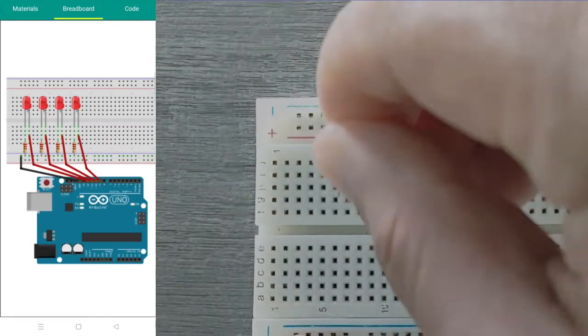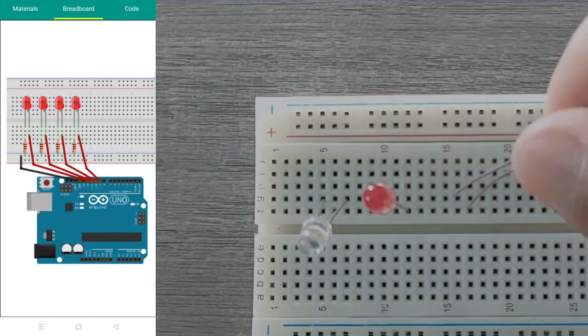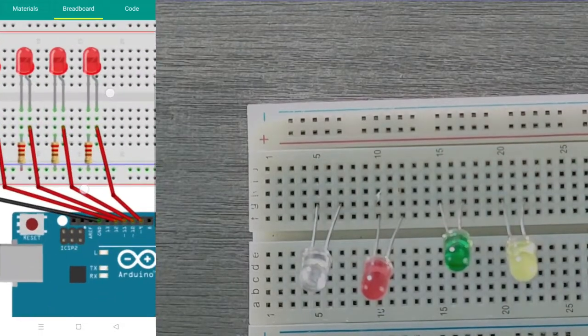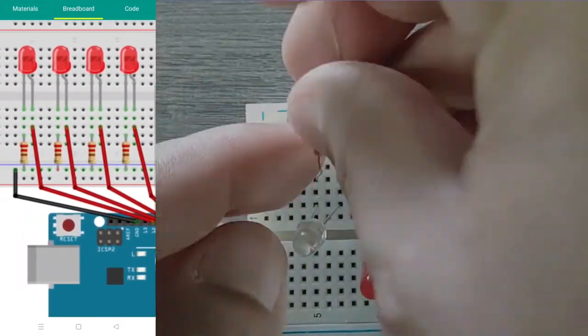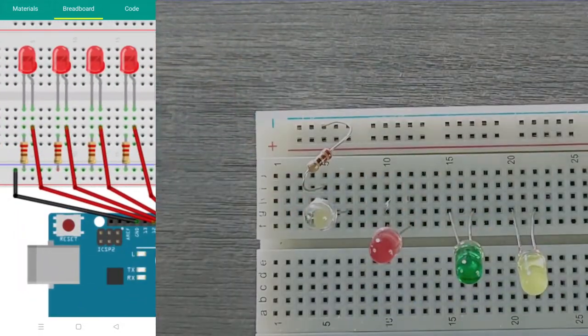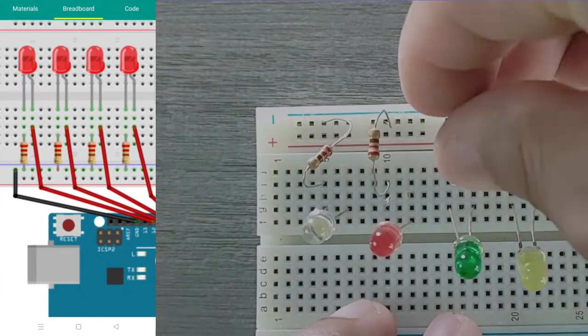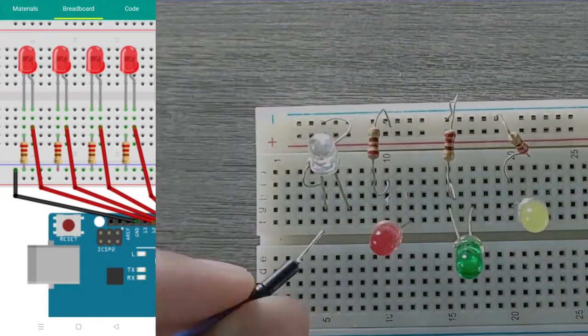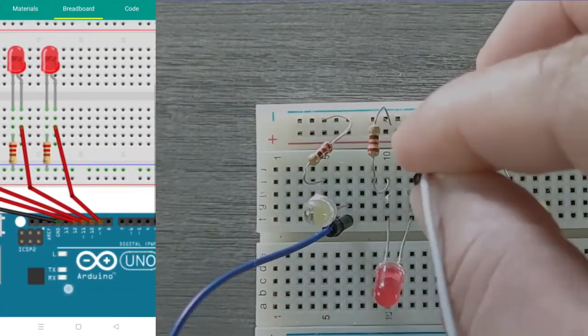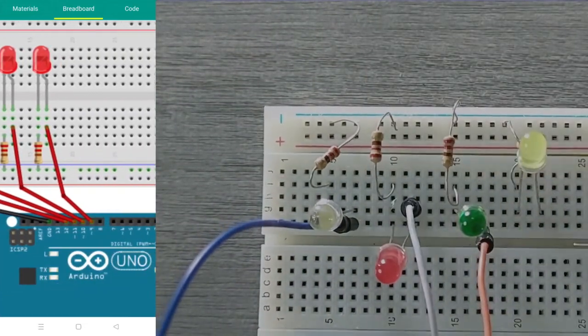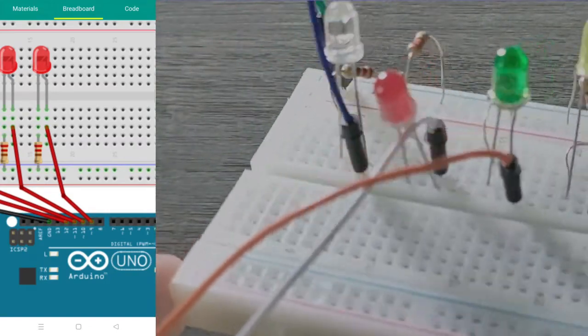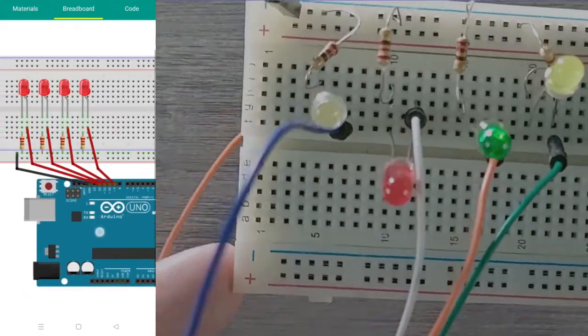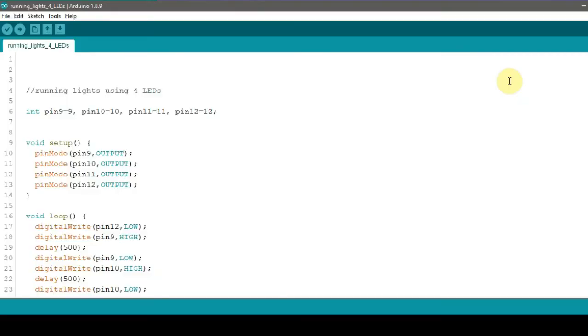Based on the breadboard diagram, we connect the anodes of each LED to different pins. While the resistors are all connected from the cathodes of the LEDs into the power rail and finally into the GND pin of the Arduino. Note that by using the power rail, we were only able to use one jumper wire to connect all resistors to the GND pin. Here is the complete code for the running lights effect.